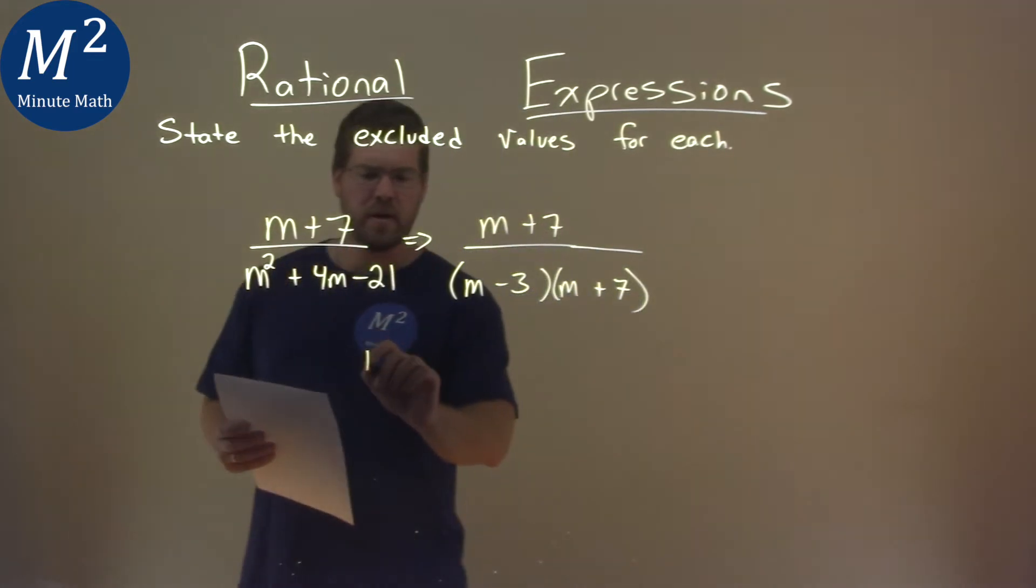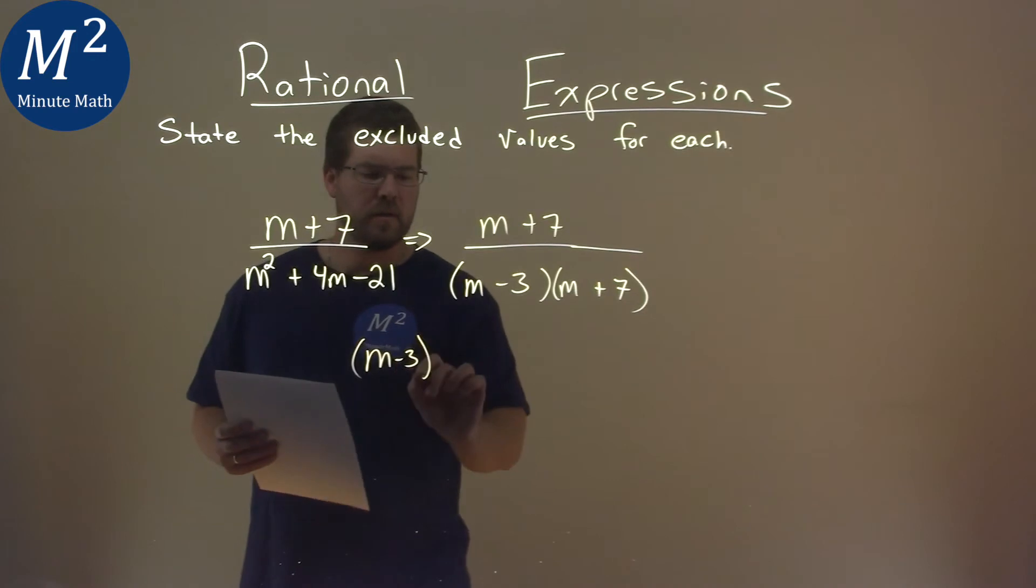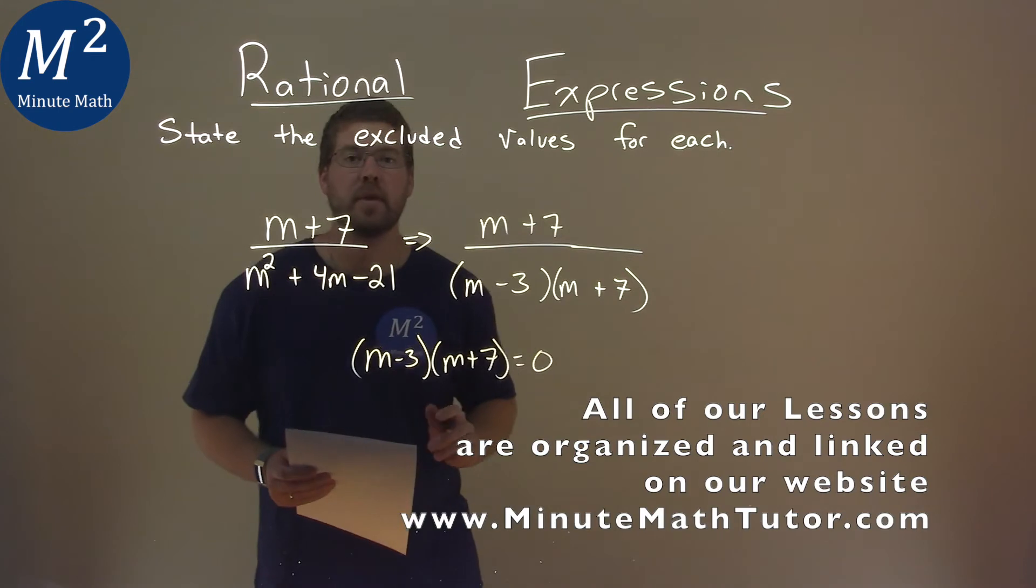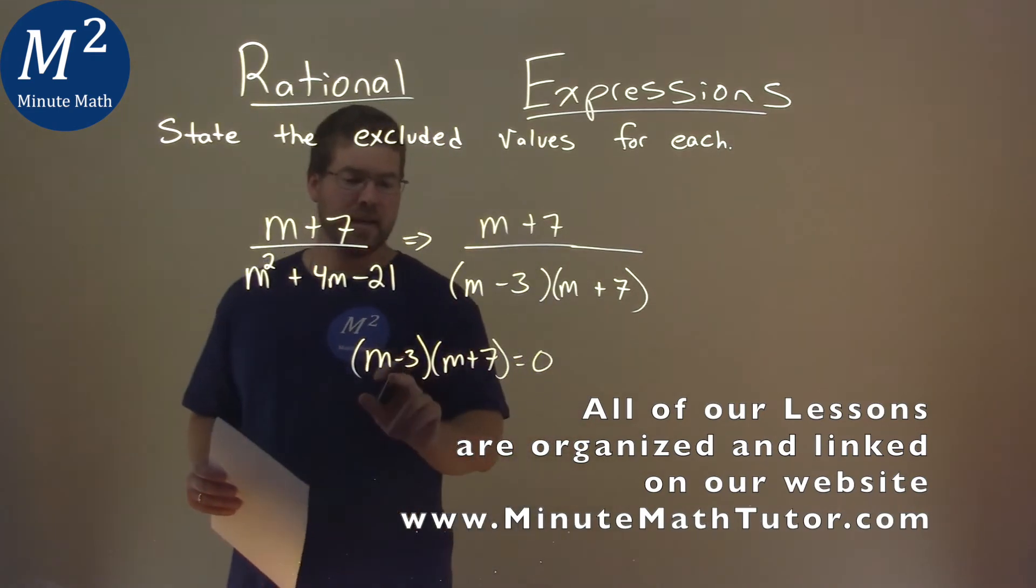So we take our denominator, our m minus 3 times an m plus 7, and we're going to set that equal to 0. And our rules here say we can take each parentheses individually and set them equal to 0.